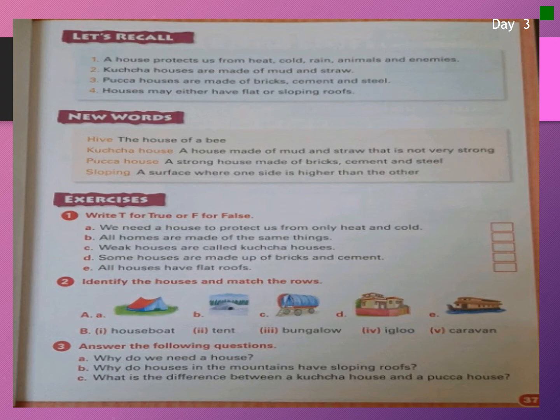So what did we learn in this lesson? A house protects us from heat, cold, rain, animals and enemies. Kacha houses are made of mud and straw. Paka houses are made of bricks, cement and steel. Houses may either have flat or sloping roofs.